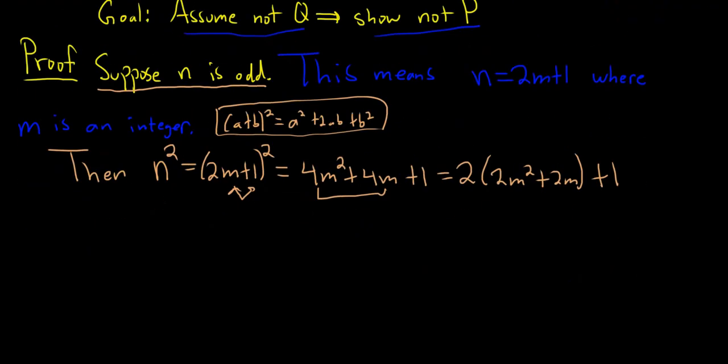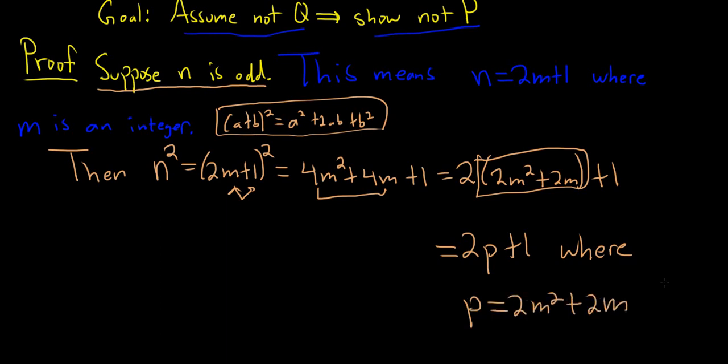And for clarity, we can give this a name. We can give it any name we like, except the letters we've already used. How about 2p plus 1, where p is equal to 2m squared plus 2m. And more importantly, p is an integer. That's important for the definition of odd.